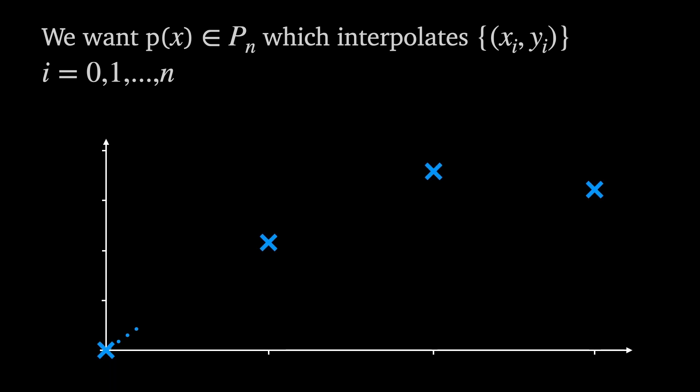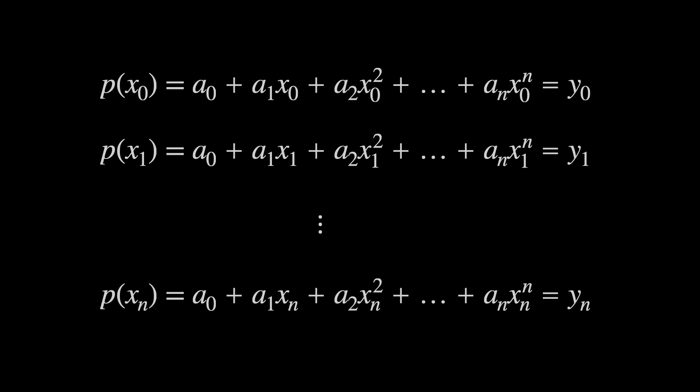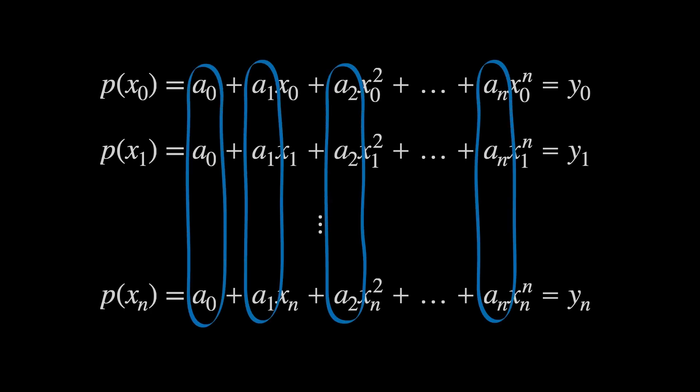Okay back to our problem. We want to find a polynomial p of x in p sub n which interpolates a given set of nodes. By definition then p of x sub 0 must equal to y sub 0, p of x sub 1 equals y sub 1 and so on. This gives us n plus 1 simultaneous equations and n plus 1 unknowns. The unknowns in this case being the coefficients a sub 0 to a sub n.